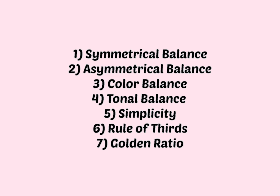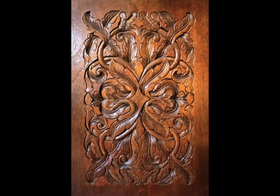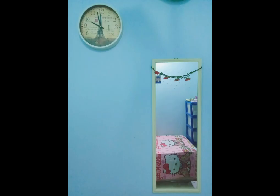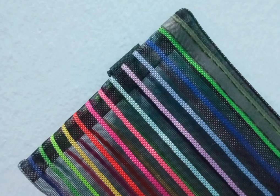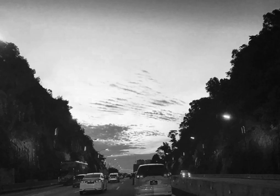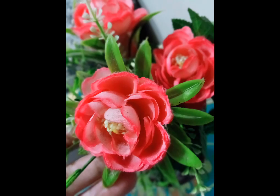Now I'm going to show you examples of pictures that I took. The device I used is an OPPO mobile phone. The first example is symmetrical balance — I took a photo of carved wood because both sides have equal weight. The second example is asymmetrical balance — I took a picture of a mirror and clock to make it look like informal balance. The next example is color balance — I took a picture of a colorful pencil case with a black plain surface. For tonal balance, I took a picture of a highway landscape where the foreground is darker and in harmony with the lighter background.